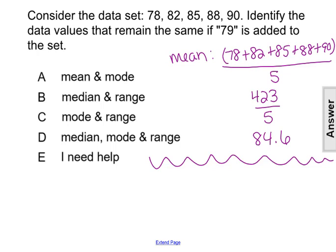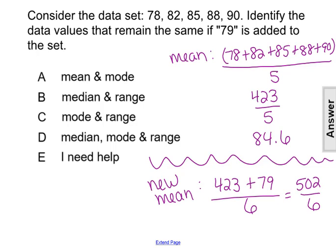If we add 79 to the data set, we would have to find the new mean. We would have to find the same sum of all of those five data points in the set, but then we would have to add 79. So that's going to be 423 plus now 79, now divided by 6. That's going to equal 502 divided by 6. So our new mean is going to be 83.7.